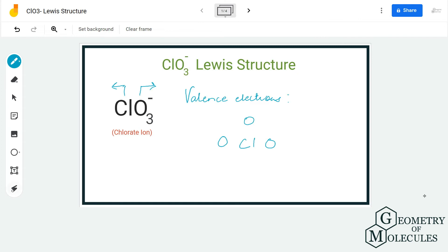Hi guys, welcome back to our channel. In today's video we are going to look at the Lewis structure for chlorate ion. To understand the Lewis structure, we first need to know the number of valence electrons here.